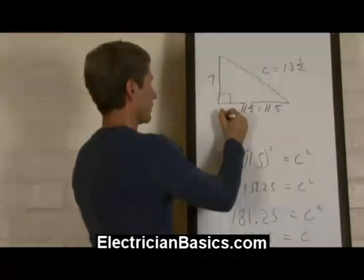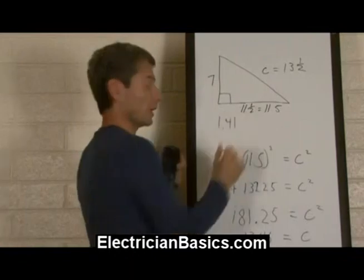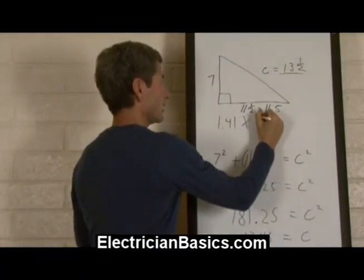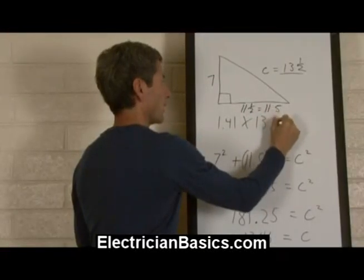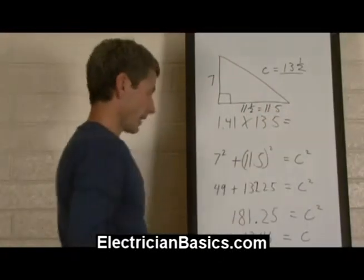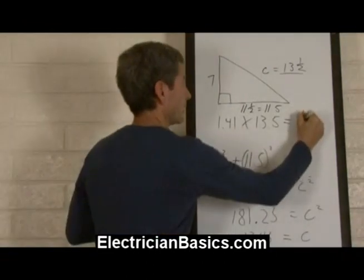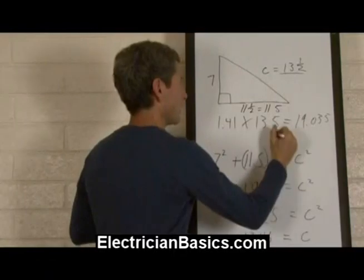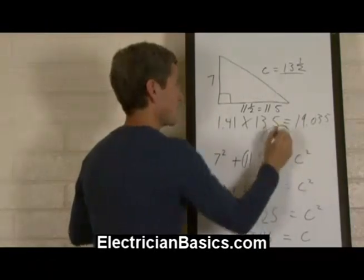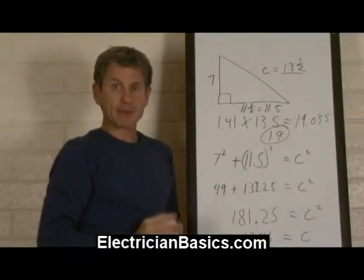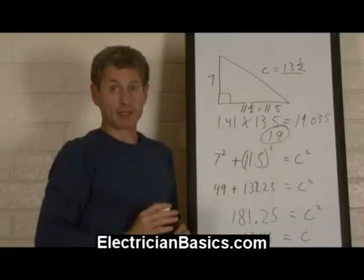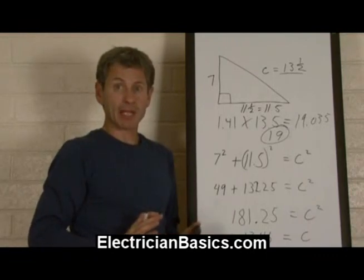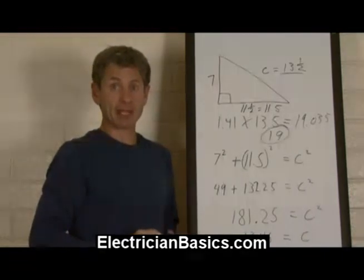Our multiplier is one point four one, and we multiply that times thirteen point five. On the calculator, that equals nineteen point oh three five. So we'll use nineteen inches for the distance between our marks. That's how we're going to mark this pipe, and we're going to bend a forty-five degree angle. Now it's time to bend that conduit.